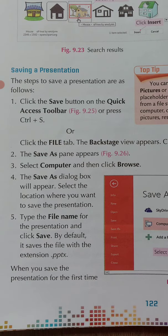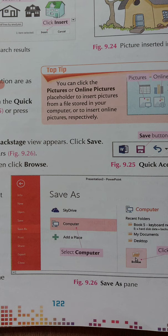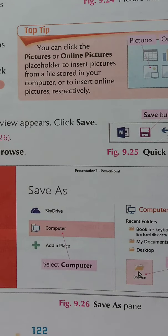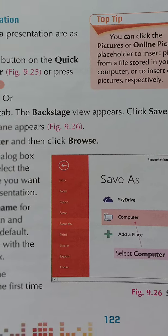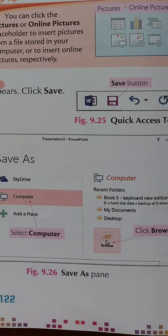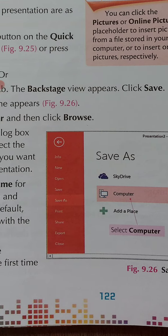Then come to step 2: the Save As pane appears. Step 3: select Computer and then click Browse. In figure 9.26 you can see the option Computer — you are going to click that Computer option, and then click the Browse option shown in figure 9.26, clicking it with your mouse.